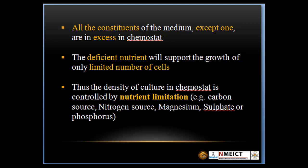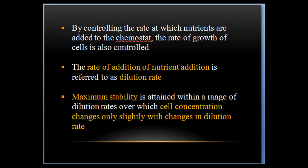All the constituents of the medium except one are in excess in a chemostat. The deficient nutrient will support the growth of only a limited number of cells. Thus, the density of culture in a chemostat is controlled by nutrient limitations, i.e., carbon source, nitrogen source, magnesium, sulphate, or phosphorus. By controlling the rate at which nutrients are added to the chemostat, the rate of growth of cells is also controlled.